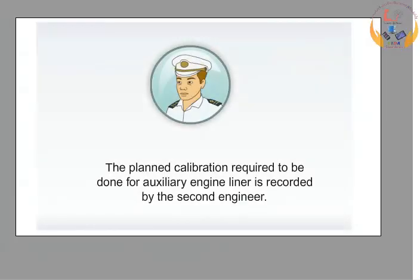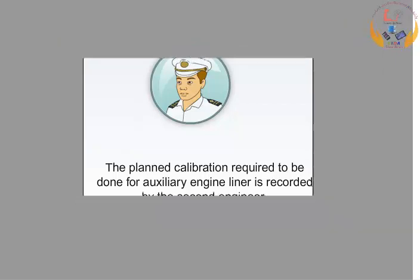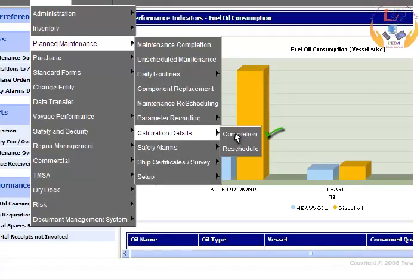The plan calibration required to be done for Auxiliary Engine Miner is recorded by the second engineer. Now observe the way details are entered for calibration completion in Ship Manager.